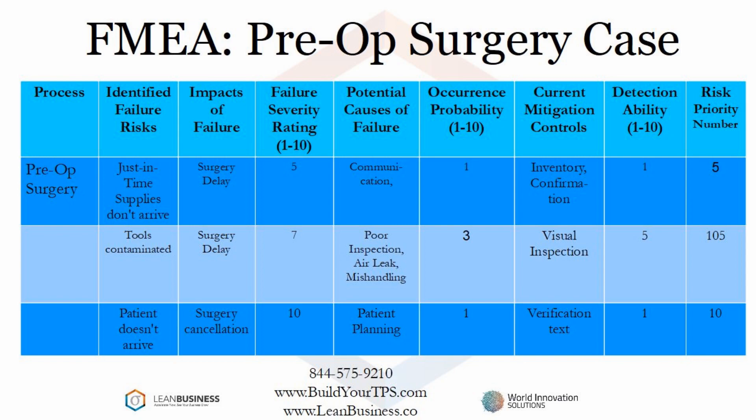Each of these failure risks has a defined impact to surgery. If supplies aren't available, the surgery will be delayed, just as if the tools were contaminated. Both of these failure modes would cause a delay in the surgery. The patient not arriving would result in a surgery cancellation. Now that the impacts have been identified, a rating is attached to each impact of failure. The numbers put in here are just an example. The next step is to identify the causes of failure. Just-in-time supplies not arriving could be a result of poor communication. Contaminated tools could be caused by poor inspection, an air leakage in the packaging, or mishandling of those tools. Lastly, the case where the patient doesn't arrive could be caused by poor patient planning or scheduling.